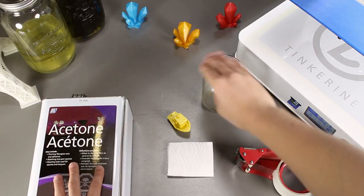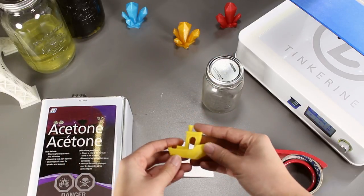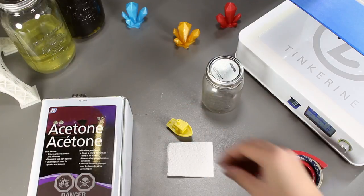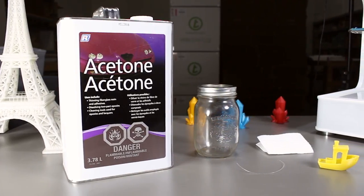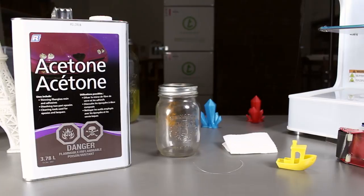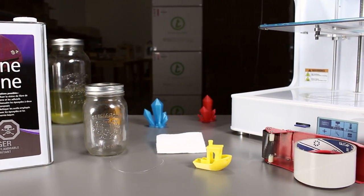Welcome to another episode of Tinkering Experiments. Today we are going to try vapor smoothing our benchy boat I have here. We heard that vapor smoothing with acetone will smooth out the PLA prints and we are here to find out today whether or not that is true.